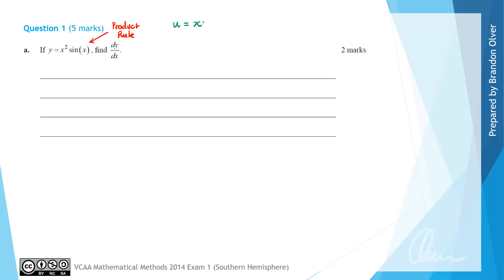To help apply the product rule, we're going to let u equal x squared, which is the first function multiplied, and v is equal to sine of x, which is the second part that's multiplied together.